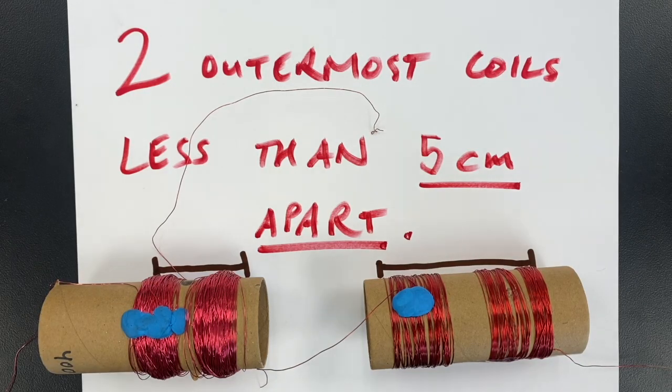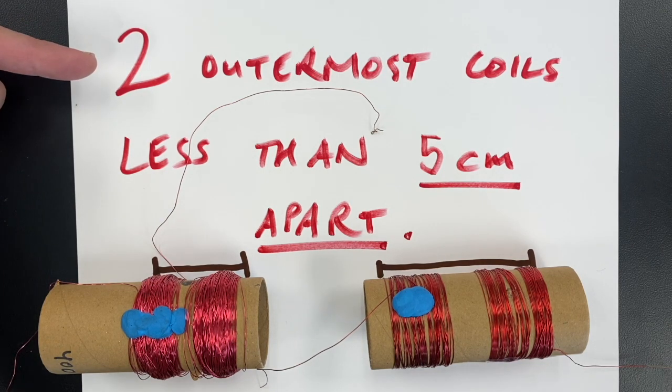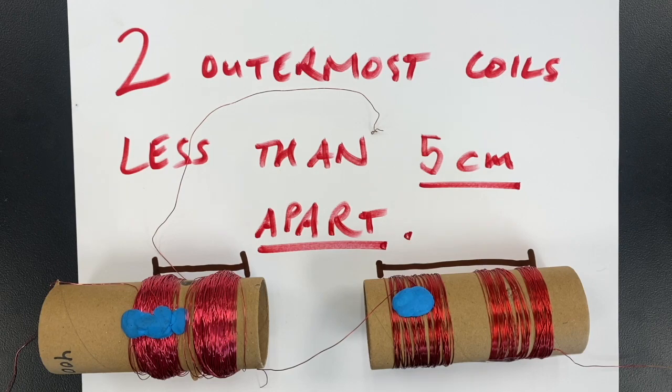A word about coil wrapping before we go on. The distance from the spinning magnets to the coils themselves matters a lot for the strength of the generator. So our guideline is the two outermost coils in your wrapping should be less than five centimeters apart.